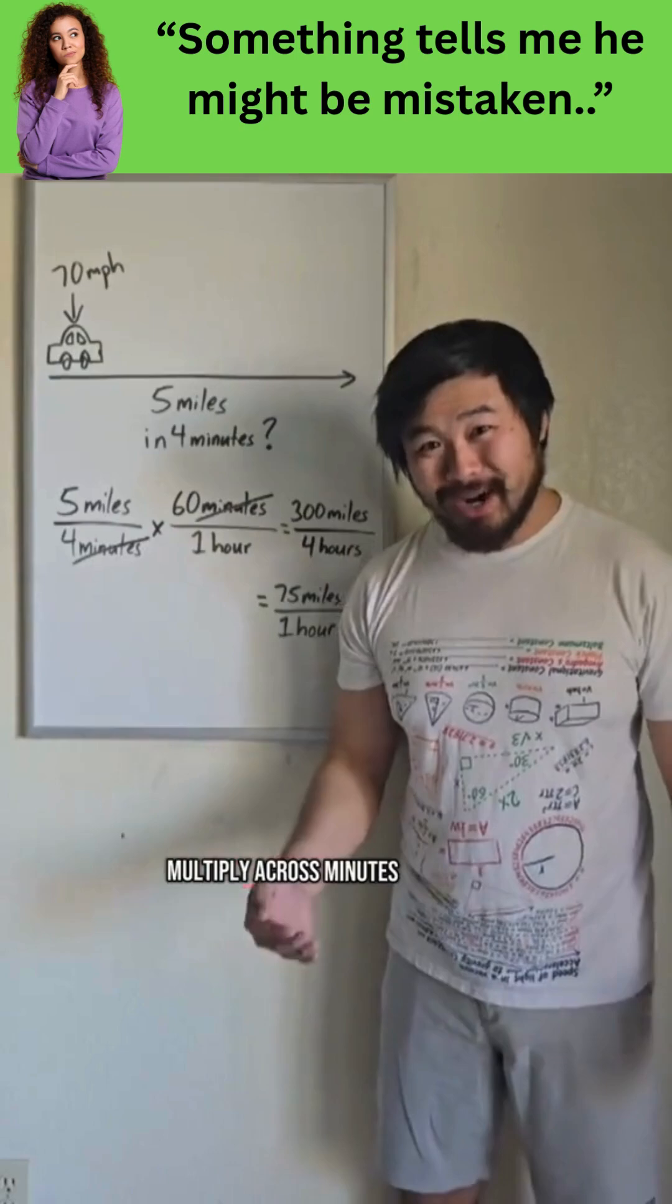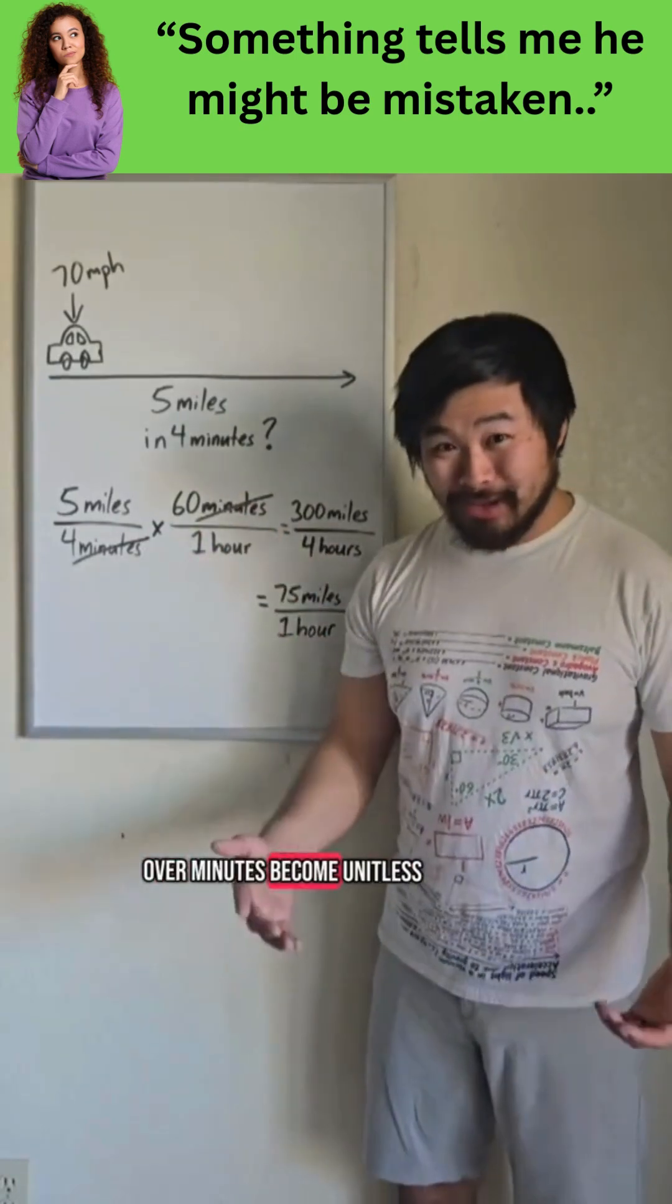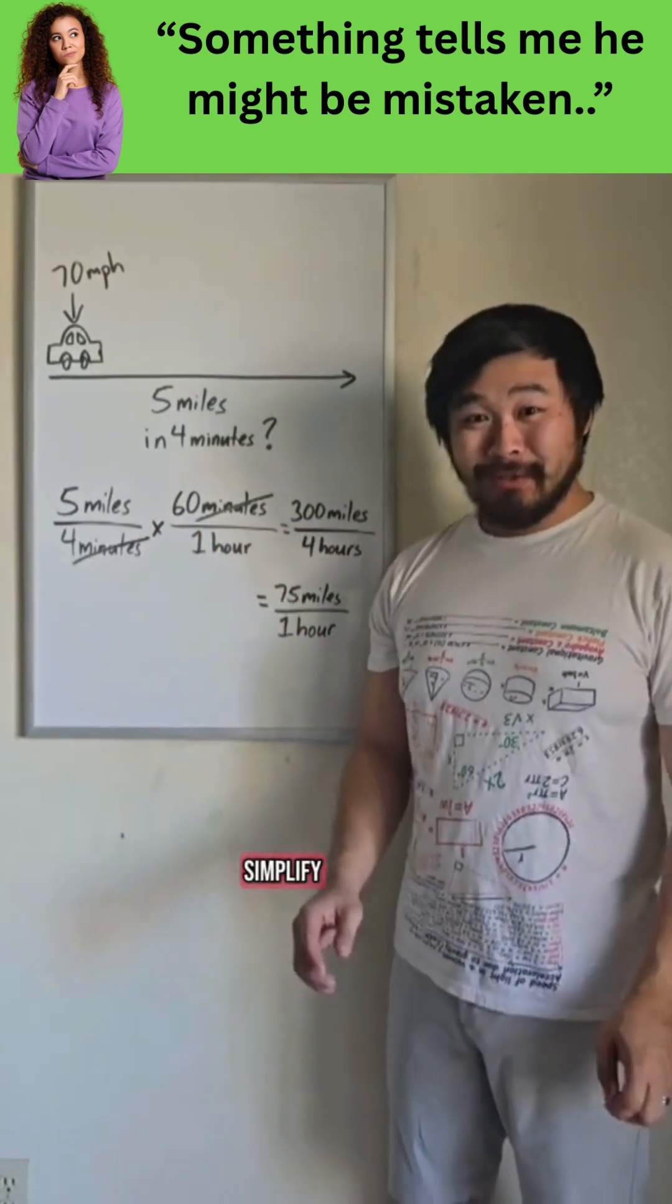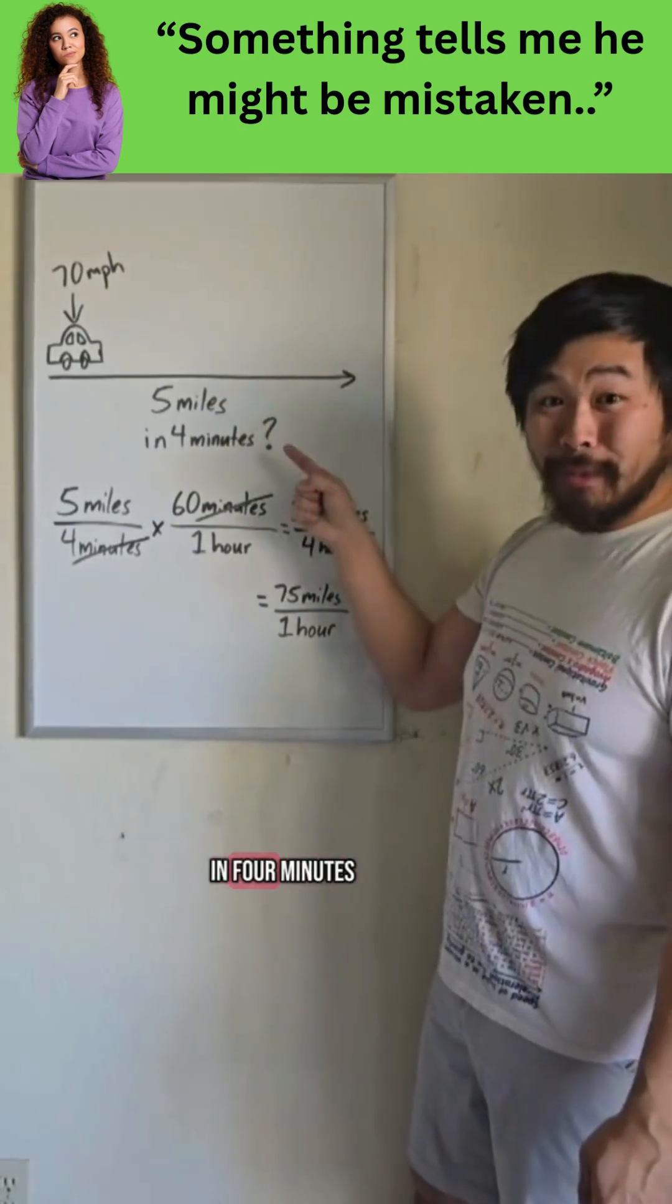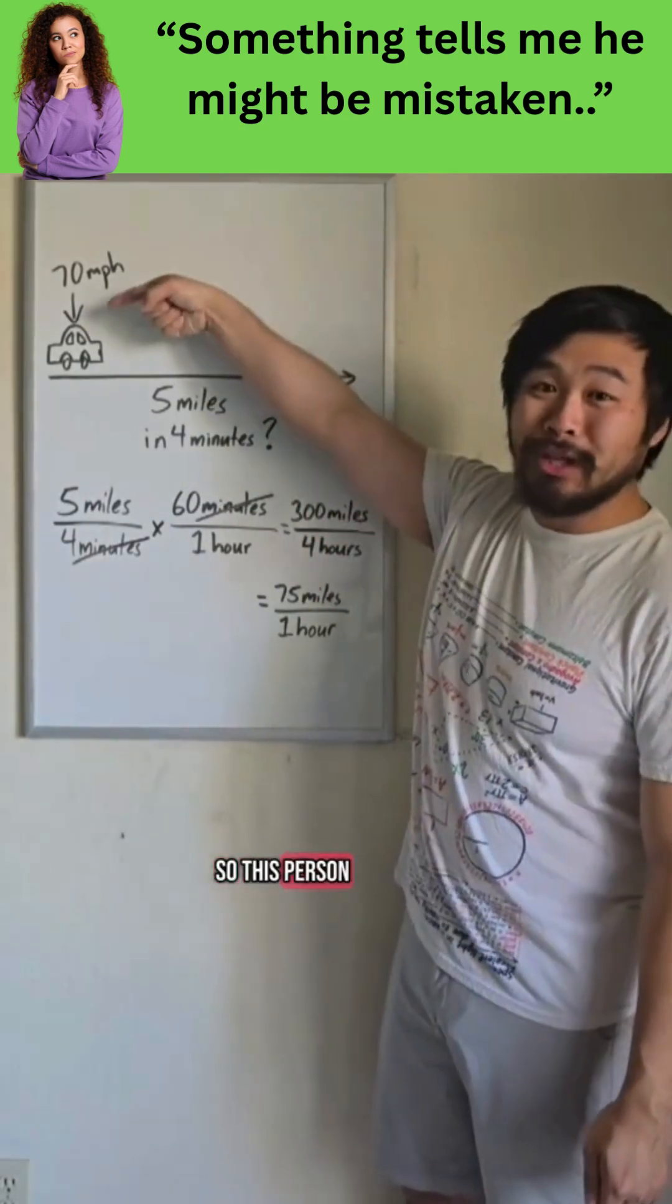So when we multiply across, minutes over minutes become unitless. And when we simplify, we see that we need to drive 75 miles per hour to go five miles in four minutes. So this person will not make it in time.